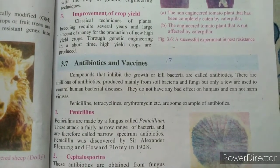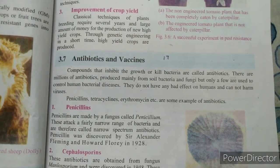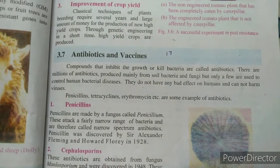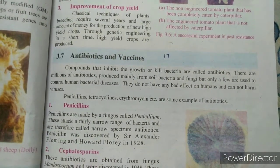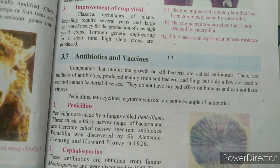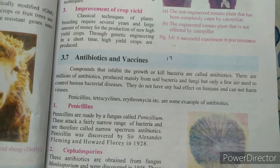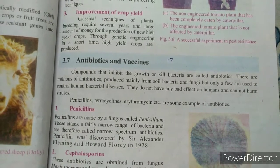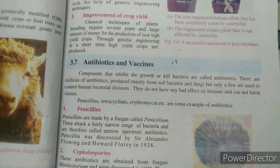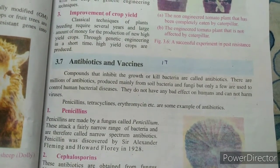Before we start the topic, there are some important points you need to understand. Antibiotics are basically compounds or substances — materials and minerals — which are present in our body. They control infections and diseases caused by bacteria. These compounds stop bacteria's growth or work against bacteria, and so they are used as antibiotics.